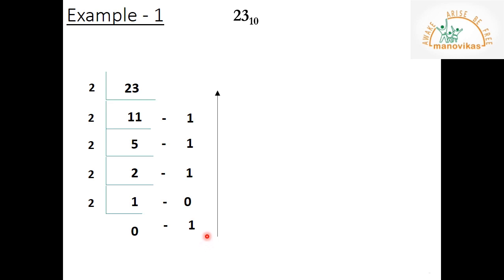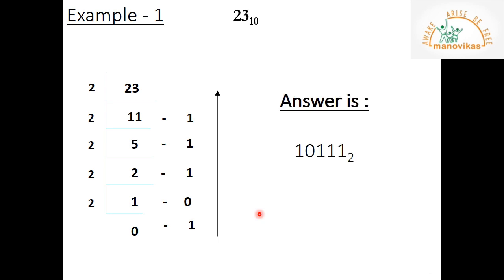Reading the remainders from bottom to top: 1, 0, 1, 1, 1, 1. So the binary equivalent of 23 base 10 is 10111 base 2 — wait, the remainders from bottom to top give 101111 base 2. Don't forget to mention the base value; if you don't mention it, your answer will be considered wrong.